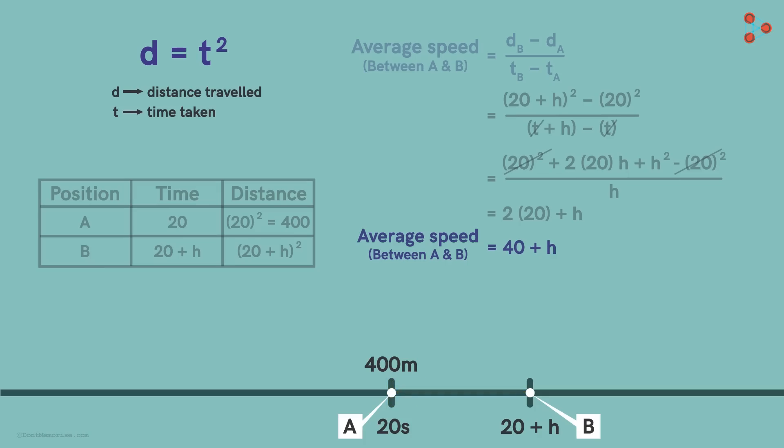Then we see that as h approaches 0, the average speed approaches the number 40 exactly.